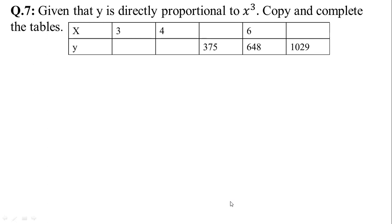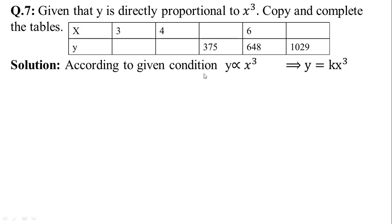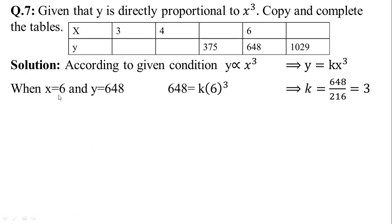In Question No. 7, y is directly proportional to x cubed. Copy and complete the table where x and y values are given. According to the given condition, y is equal to kx cubed. When x is equal to 6 and y is equal to 648, putting the values: 648 is equal to k times 6 cubed. 6 cubed is 216. This implies k is equal to 648 divided by 216, which equals 3. So the value of k is 3.